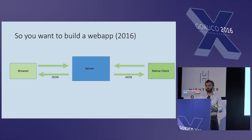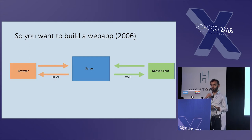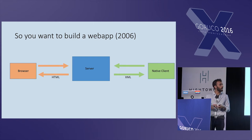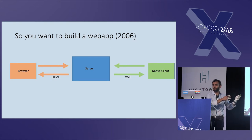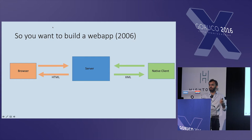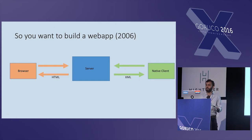If you wanted to allow someone to write a native client for your application, the native client would talk using some raw format — at the time, likely XML — and would still talk to the server. The server would talk to the database, do some more computation, and then spit back some data in that raw format. And this is kind of terrible. It's asymmetric — different clients are using different mediums to talk to the server to do fundamentally the same things.